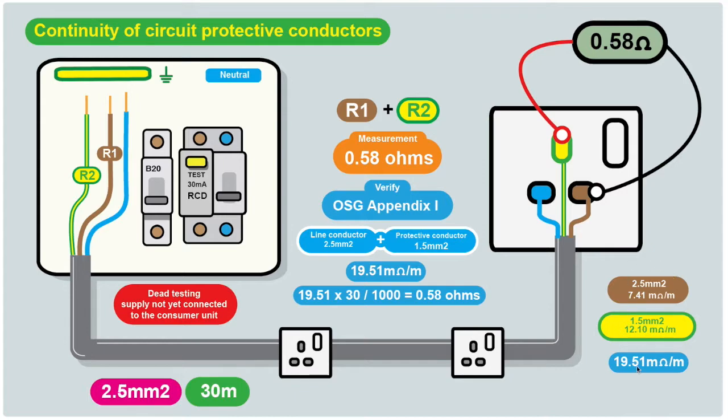The protective conductor has a smaller cross-sectional area of 1.5 millimeter squared, hence the resistance is slightly higher at 12.1 milliohms per meter. The table also does a combined measurement of resistance for the line conductor and the protective conductor. This is quite handy when you're measuring or calculating your twin in earth cable. You just use that one reading, 19.51 milliohms per meter.